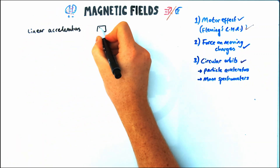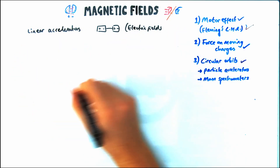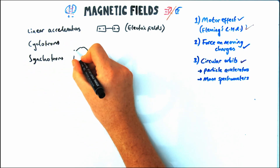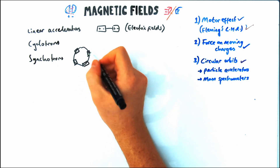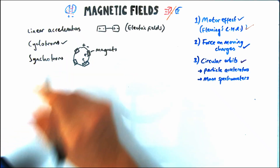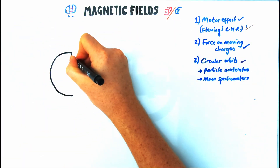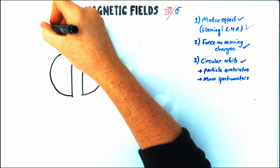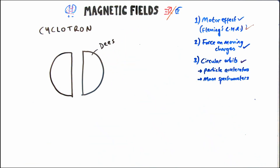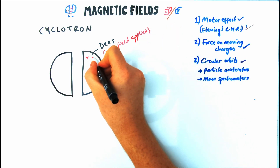Magnetic fields are essential to understanding all modern particle accelerators. Some of the earliest were linear and used electric fields to accelerate particles, but more recent inventions — cyclotrons and synchrotrons — work in a circle. They all use magnetic fields to bend the particles' paths and keep them going in a circle, with the goal of getting particles up to very high speeds for applications like medical treatment or collisions in the Large Hadron Collider.